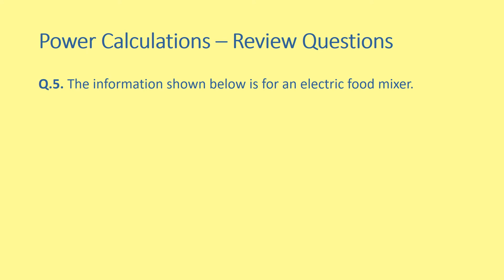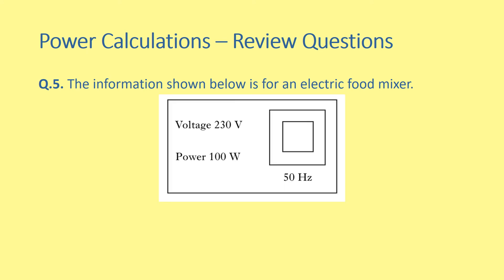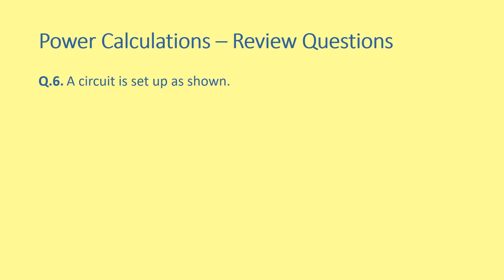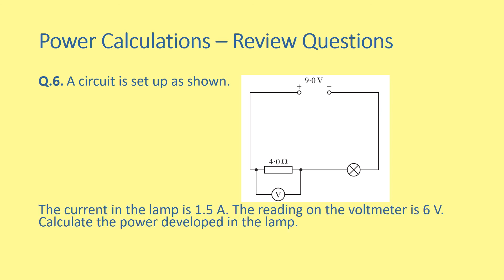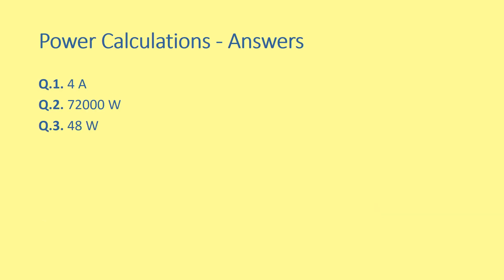Question five: the information shown below is for an electric food mixer — a ratings plate gives all the information needed. We're asked to calculate the resistance of the electric food mixer. Question six: we're extracting information from a circuit. We have a supply of 9 volts, the current in the lamp is 1.5 amperes, and the reading of the voltmeter is 6 volts — calculate the power developed in the lamp. Writing down what you know tells you which equation to choose: if you have current and voltage, use P equals IV; if you have voltage and resistance, use P equals V squared over R. Here are the answers — check them against your solutions. If you got them wrong, have another try and look back at the examples.